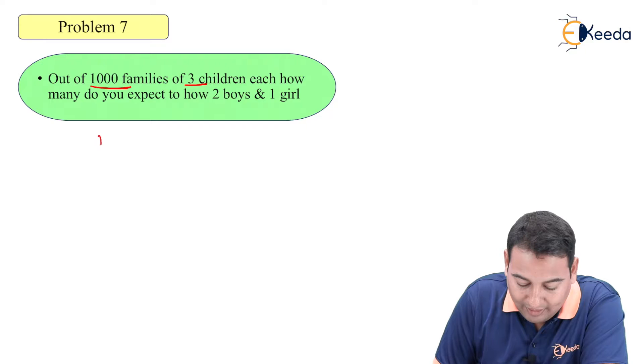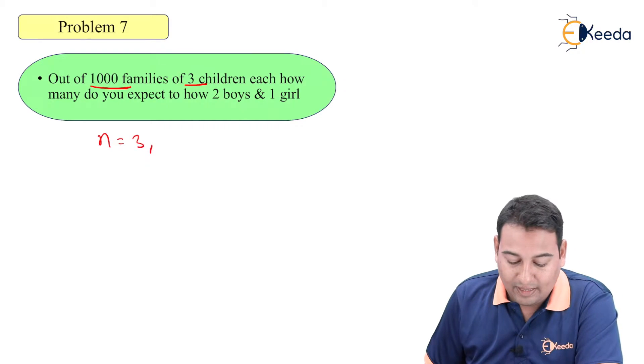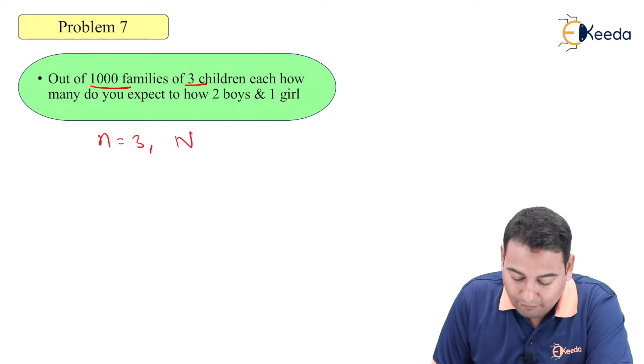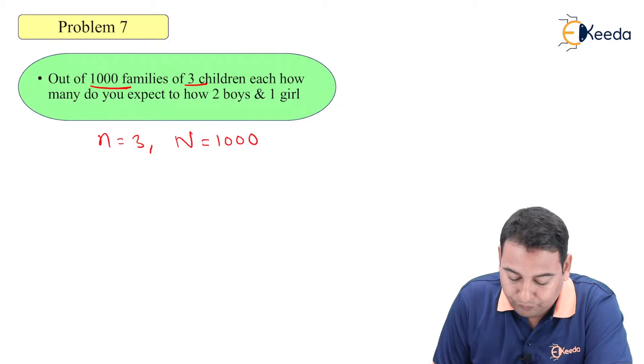Therefore, small n is 3 and likewise there are 1000 families. Therefore, capital N is equal to 1000.